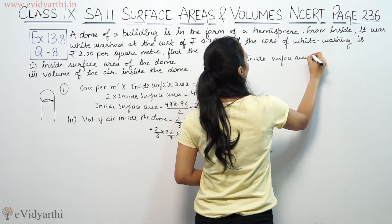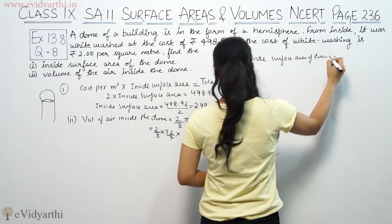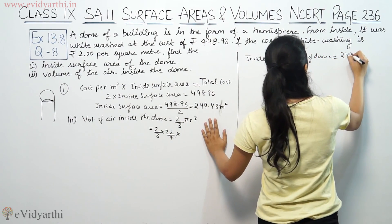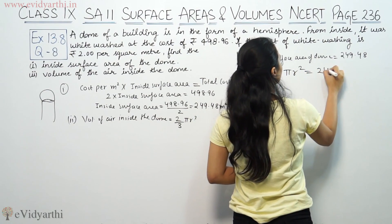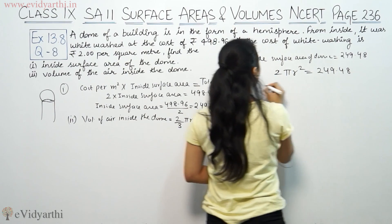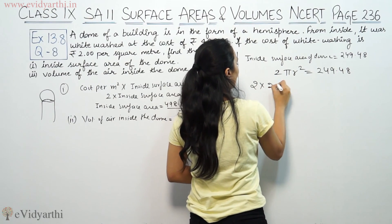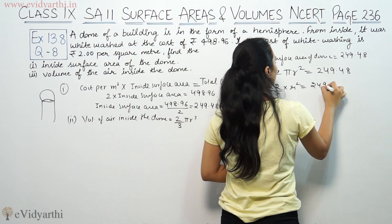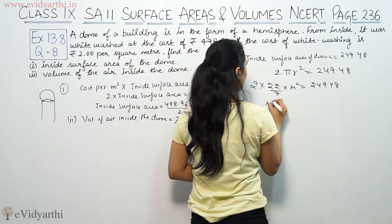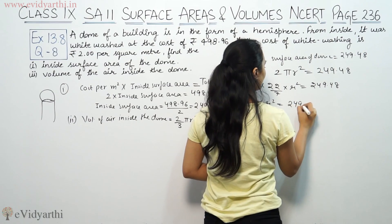Inside surface area of dome is 2πr² equals 249.48. So 2 × 22/7 × r² equals 249.48.